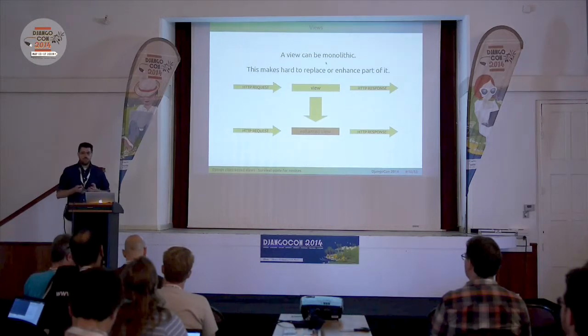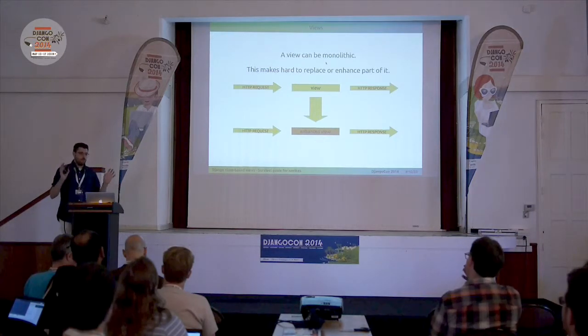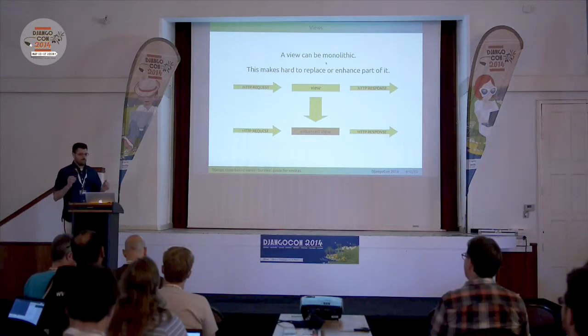As any processing system, a view can be monolithic. This is what happens most of the time with functional views — they are monolithic. And the problem with monolithic systems, everywhere in computer science, is that they are really hard to enhance, to change, to be adapted to new situations. You have to replace the world. You have to duplicate code. And duplicated code is bad for our development.